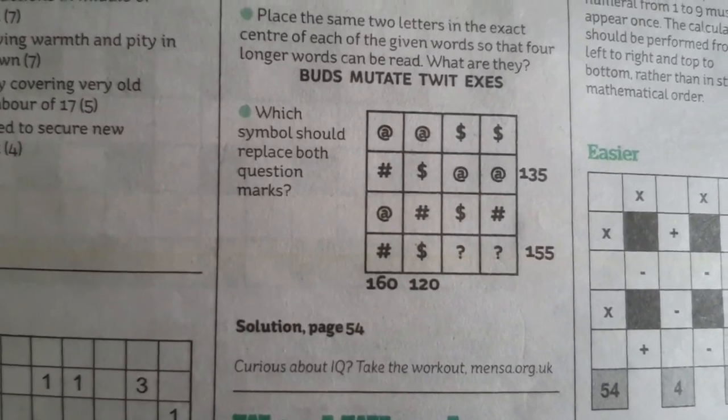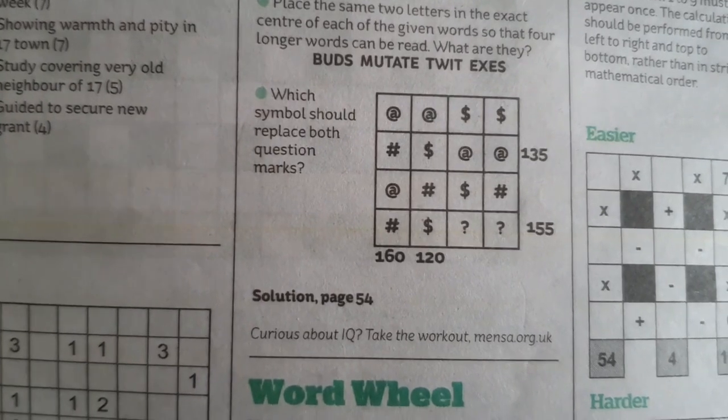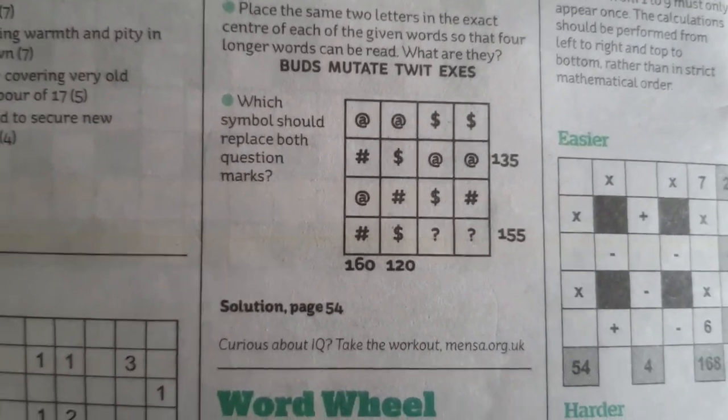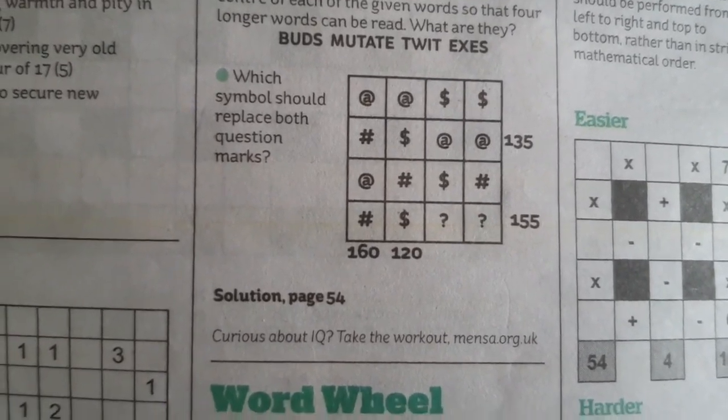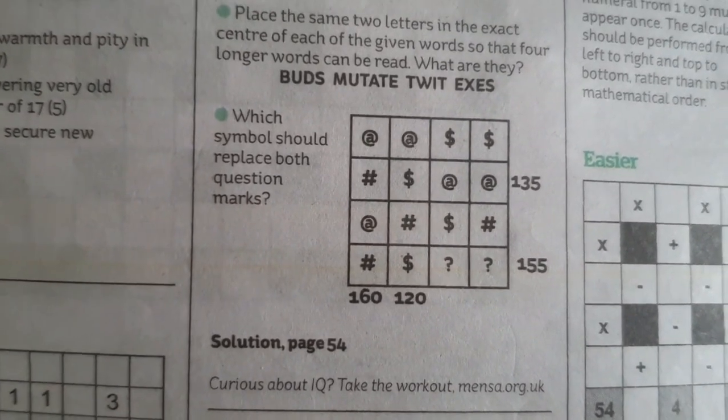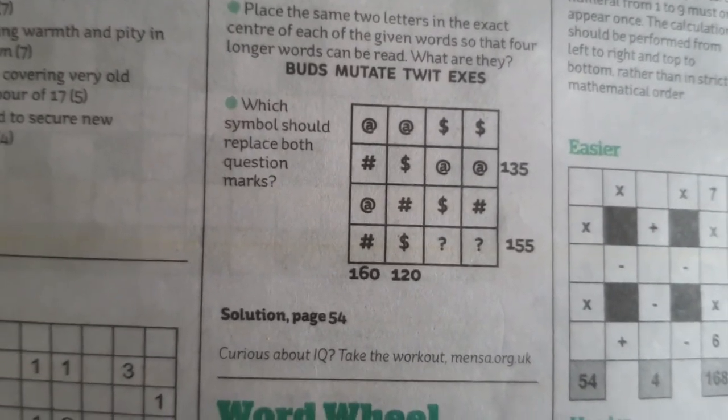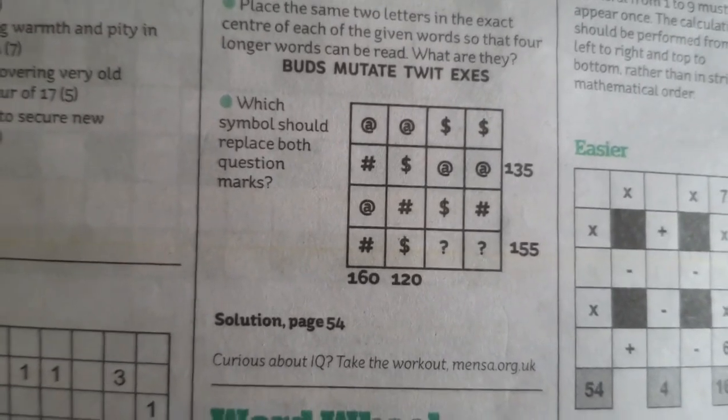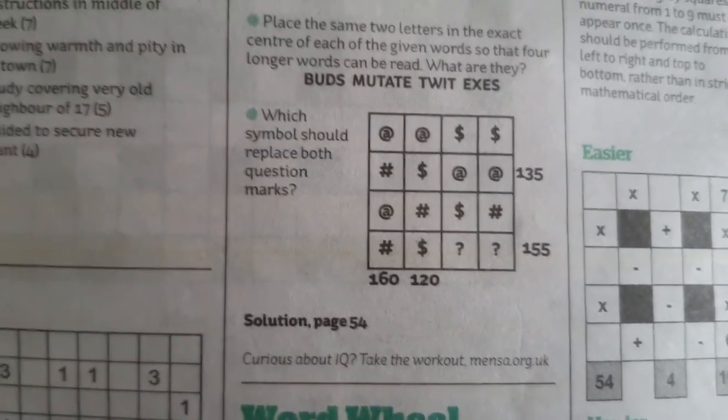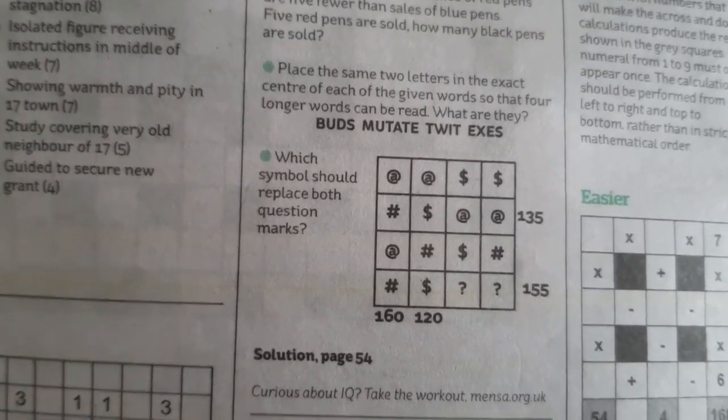What I'm going to do today is the missing symbol type Mensa brain teaser problem, and I'm going to do this using a system of equations and find the solution for the missing symbol that way. There's another video that I'm also going to post at the same time, which does it by logic and intuition. So there's two videos tackling the same problem, but in slightly different ways.